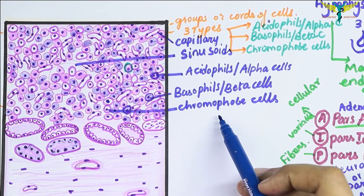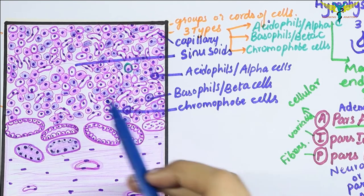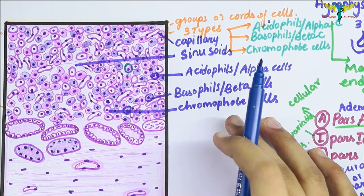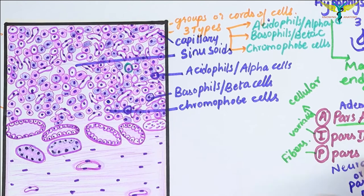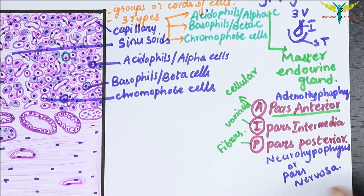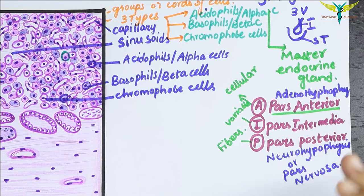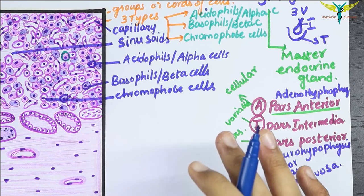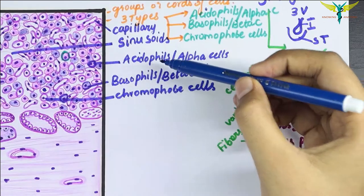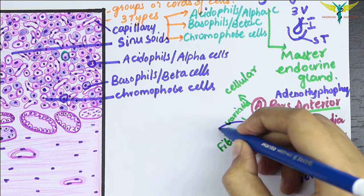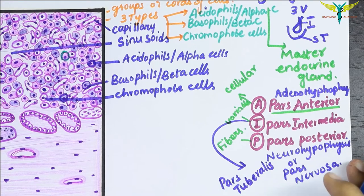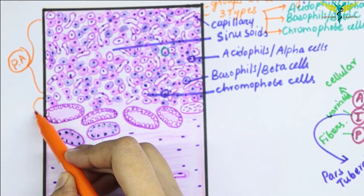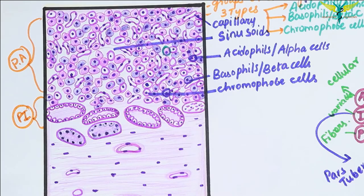The chromophobe cells, the third type of cells of the pituitary gland, do not stain darkly and contain very few granules in the cytoplasm. There is also a pars tuberalis, which is not much studied as it consists of many undifferentiated cells — some are acidophil cells and some are basophil cells.